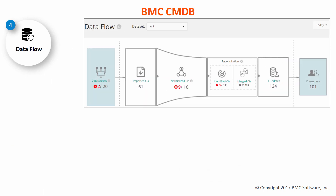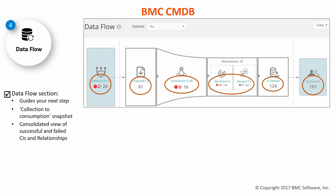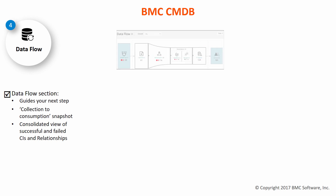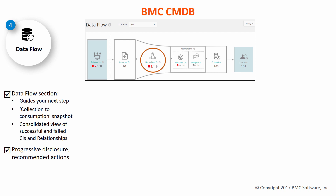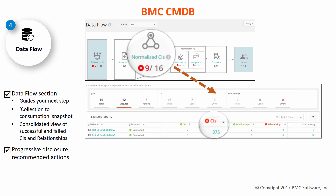The data flow section shows you a summary of the status of your data from collection to consumption. You can locate a problem easily — you know whether the problem lies, for example, in a discovery tool or in another component. You can click any component to view the exceptions and also take recommended actions to resolve issues.